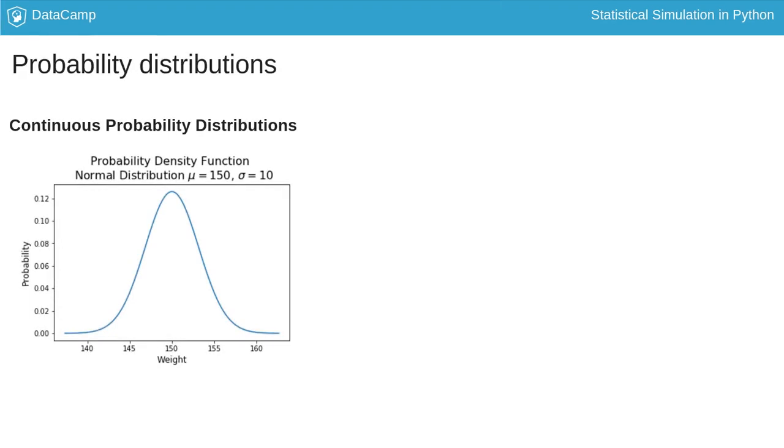A probability distribution is a mapping from the set of possible outcomes of a random variable to the probability of observing that outcome. It tells you how likely you are to observe a given outcome or a set of outcomes. Just like random variables, probability distributions are either discrete or continuous depending on the type of random variable they represent.